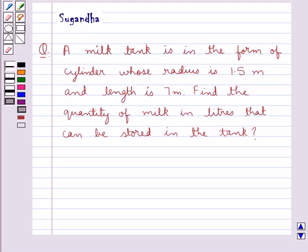Hello and welcome to the session. Today I will help you with the following question. The question says, a milk tank is in the form of cylinder whose radius is 1.5 meters and length is 7 meters.